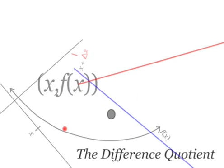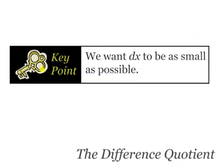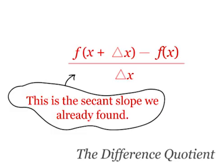We want delta x to be as small as possible, so therefore I need to make a small adjustment to my secant slope. Remember, that was f of x plus delta x minus f of x all over delta x. But we want to specifically say that that delta x needs to be as small as possible, so those lines basically overlap.